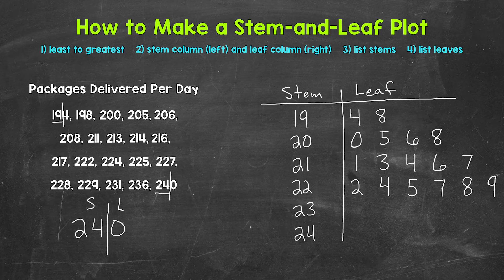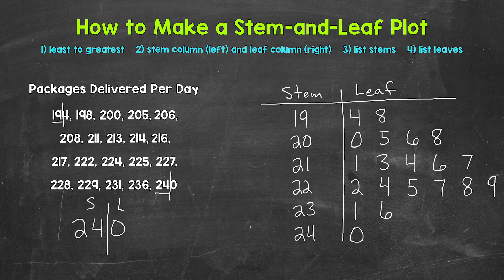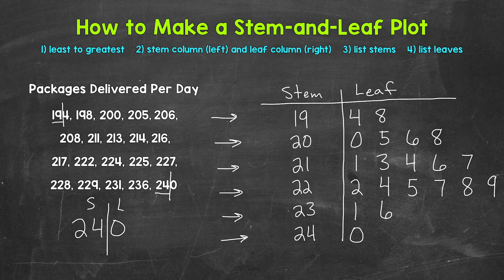Next we have 231 — we're moving to the 230s, stem of 23, leaf of 1. Then 236 — stem of 23, leaf of 6. And lastly, 240 — stem of 24, leaf of 0. That's it for our leaves. We have the 190s, 200s, 210s, 220s, 230s, and 240s. The stems are the hundreds and tens digits, and the leaves are the ones digits.